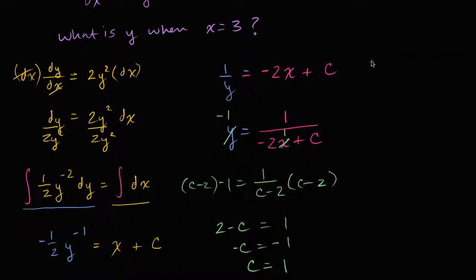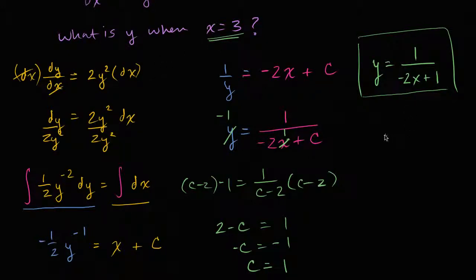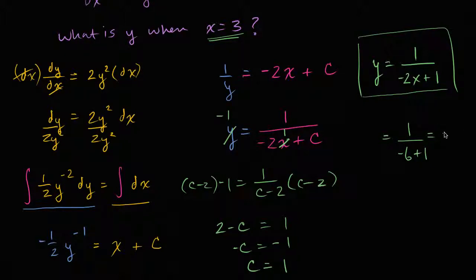Our particular solution is y equals one over (negative two x plus one). To find y when x equals three: y equals one over (negative six plus one), which equals one over negative five, or negative one-fifth. And we are done.